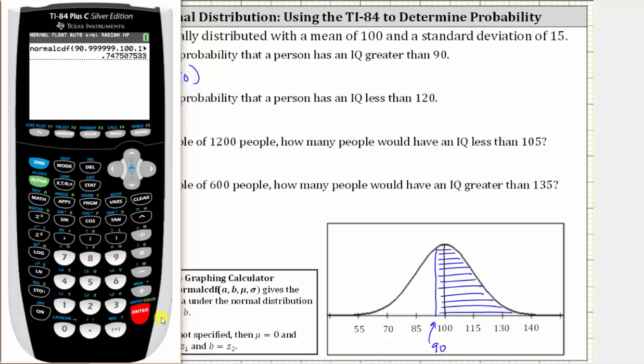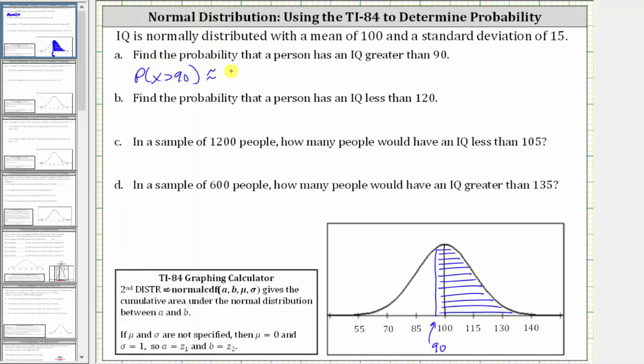As a decimal we have approximately 0.7475, which as a percentage is 74.75%.